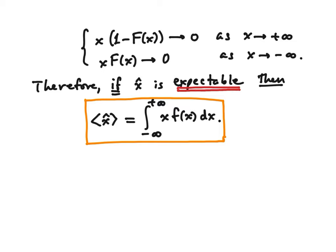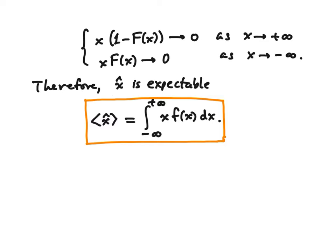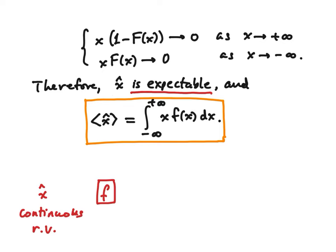Tightness means that x times (1 − F(x)) goes to zero as x goes to plus infinity, and also x times F(x) goes to zero as x goes to minus infinity. Those two things together comprise tightness. And when we have tightness, we also have the fact that the expected value, if it exists at all, is given by this integral.